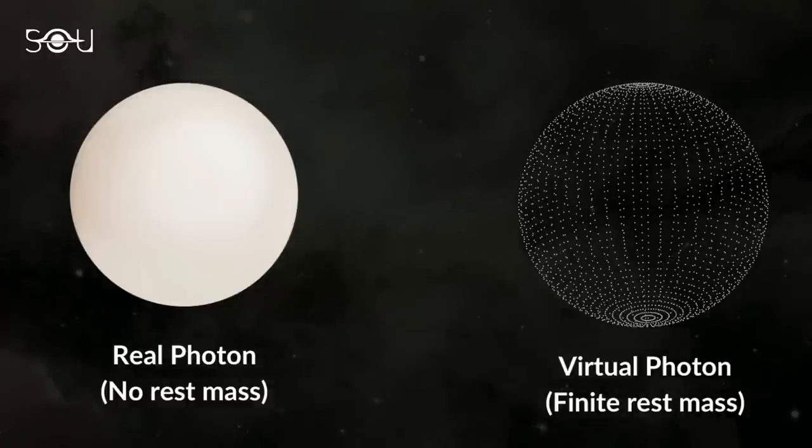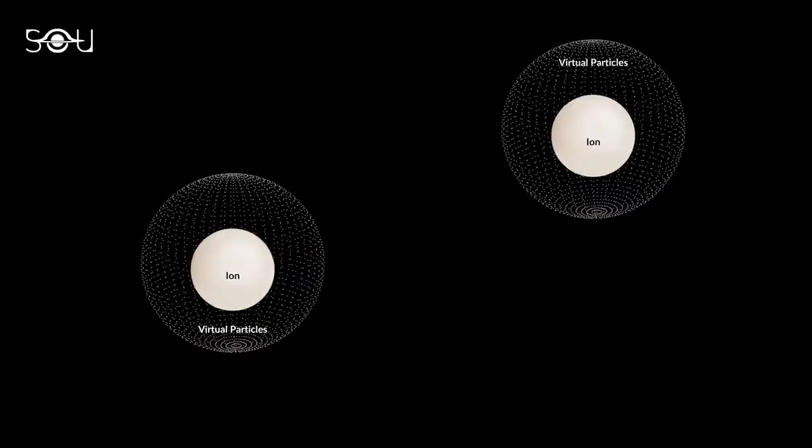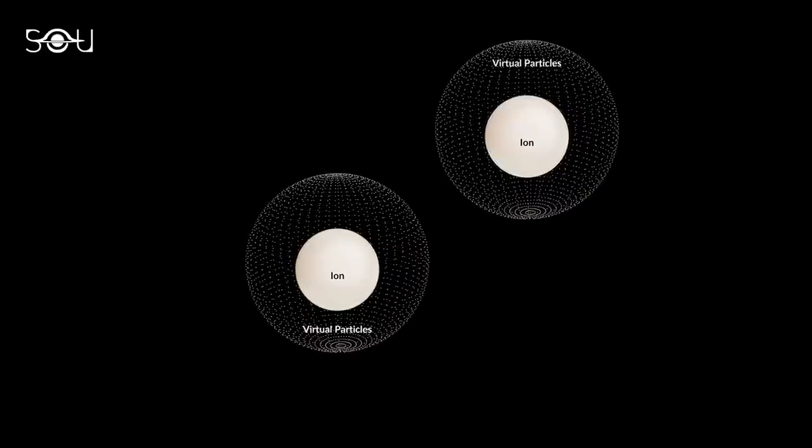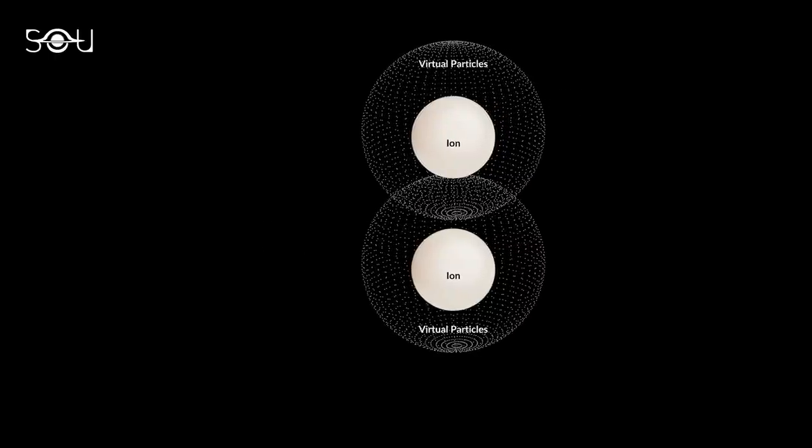Now coming to the experiment, when the ions zip past each other in a near miss, their clouds of virtual photons move so fast that they acted as if they were real. Eventually, the real acting virtual particles collided and produced a much-real electron-positron pair.